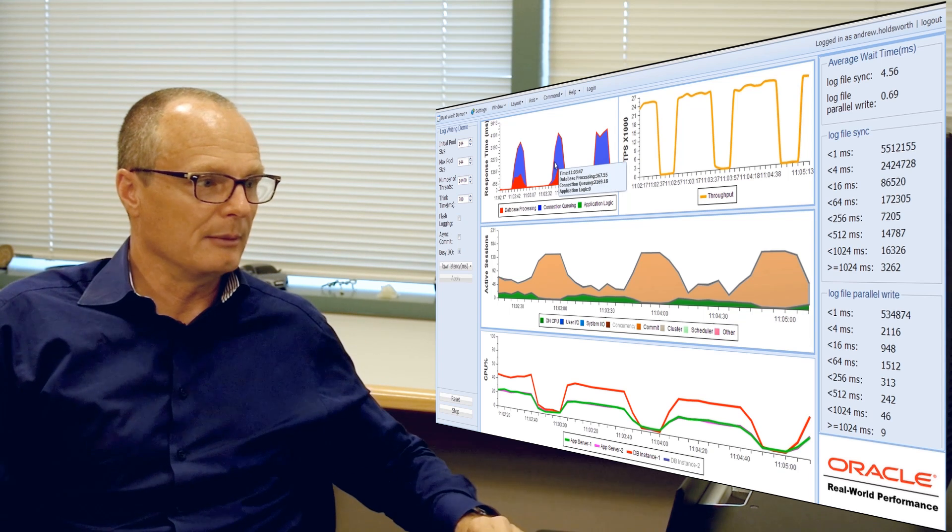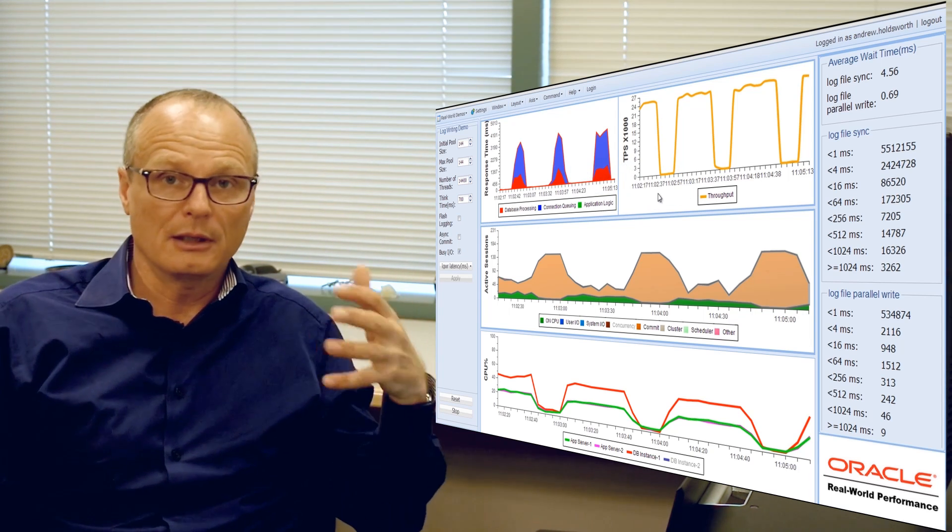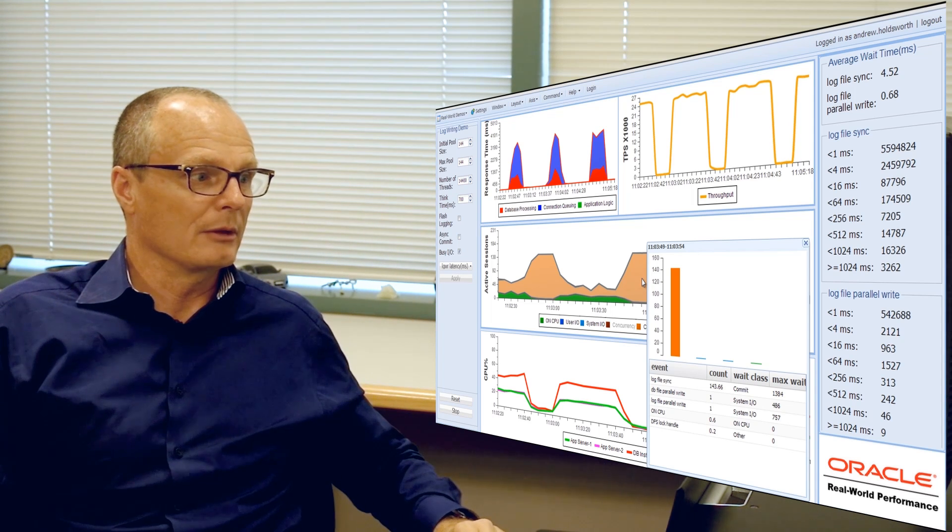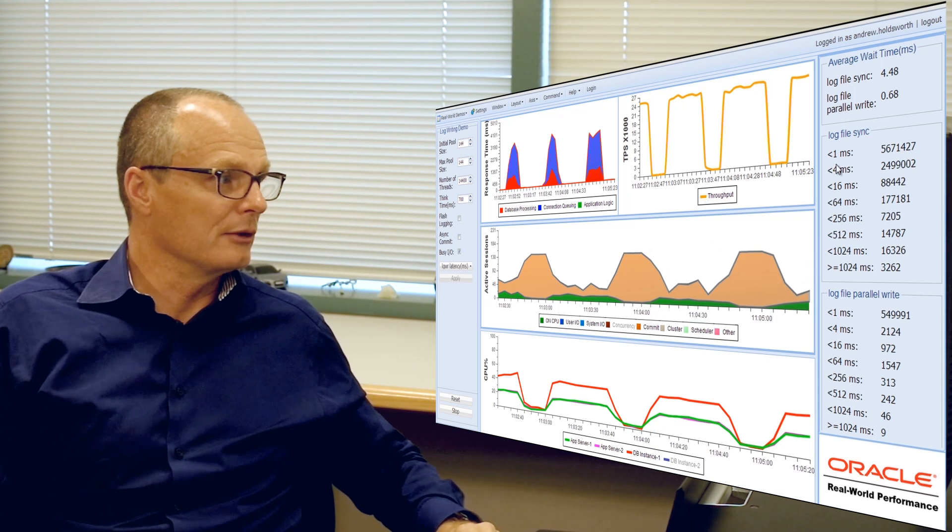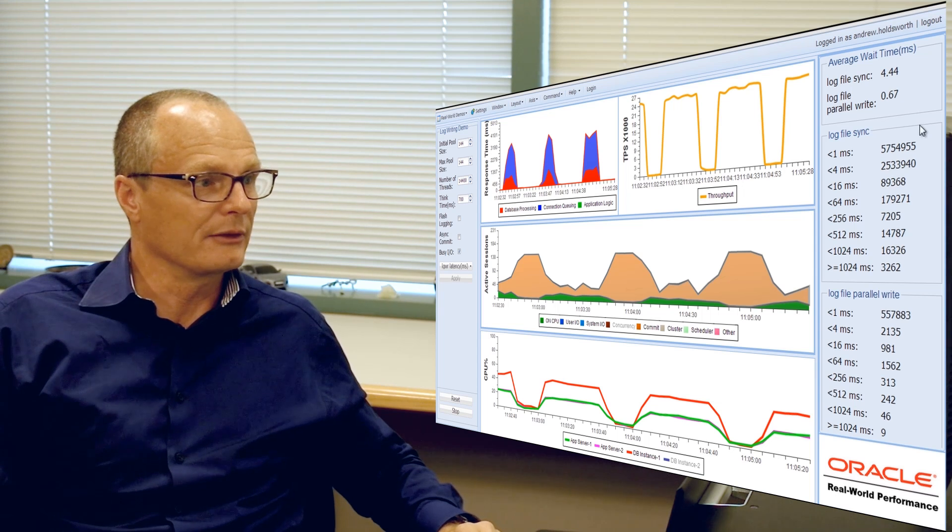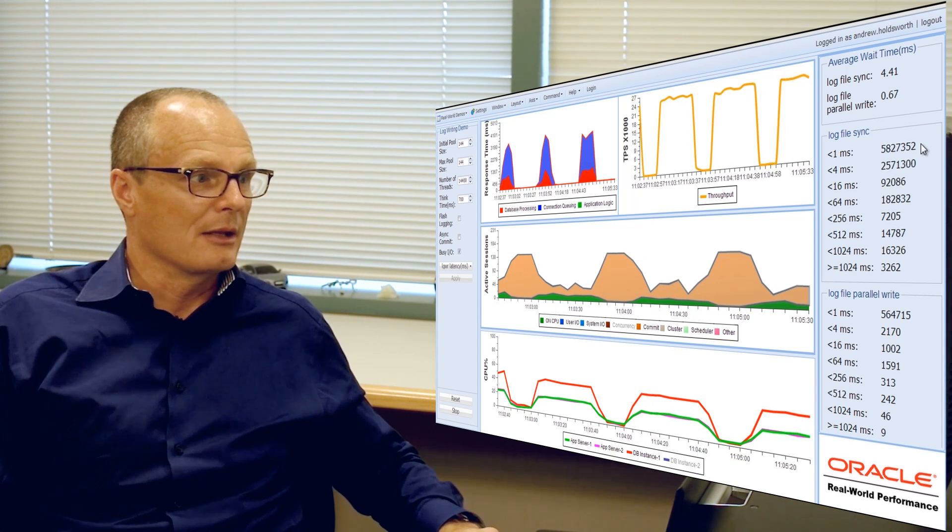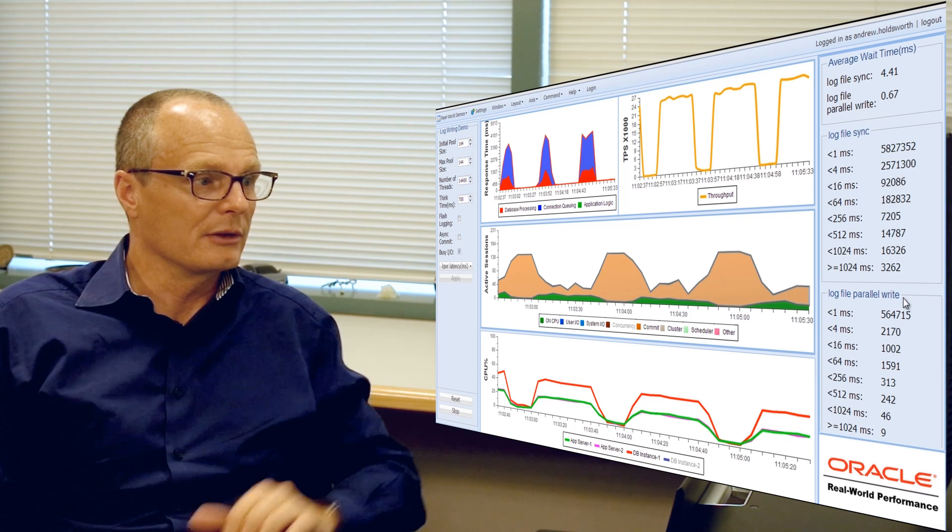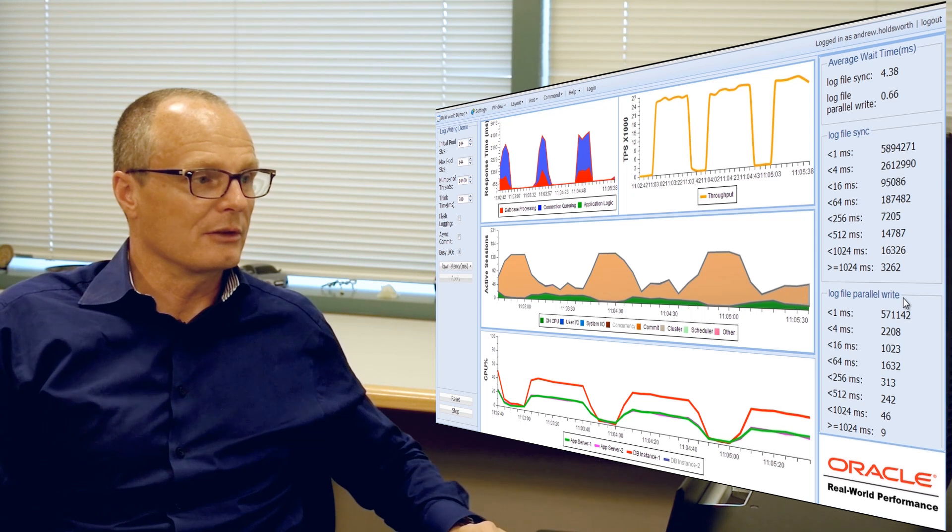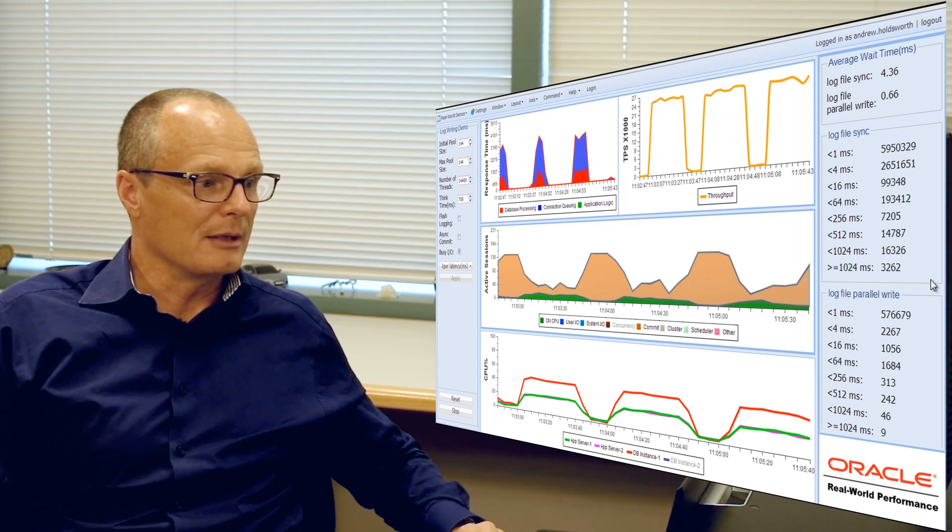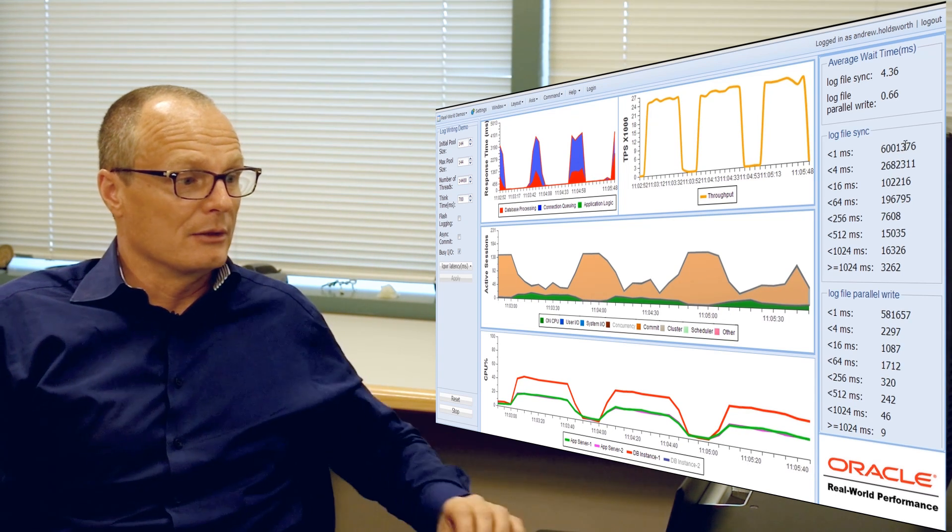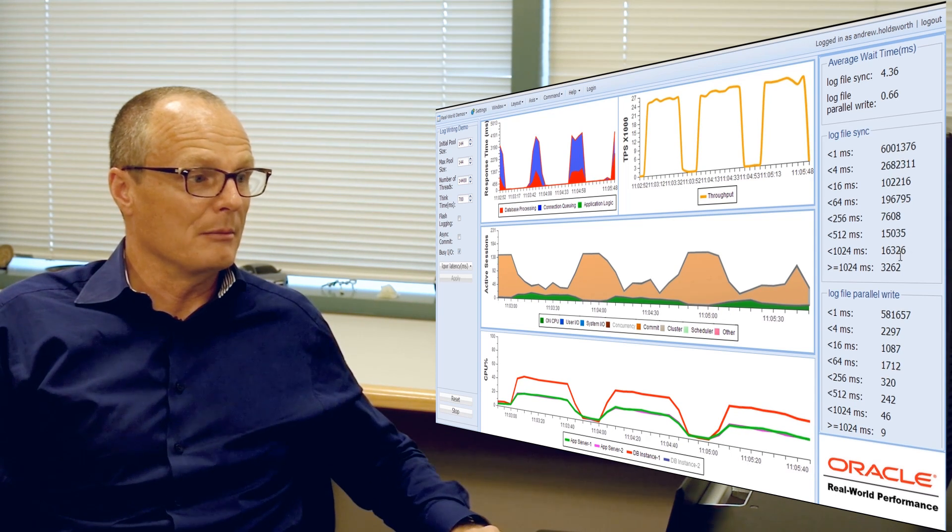Here you can see we have approximately 96 or 100 connections, just over 100 connections to the database, and you can see that the log file sync is approximately 100 times that we have on the log file write. Sometimes as we get into the situation where the log file write becomes more variable, and in fact we've got log writes that are taking more than a second, you can see that this tends to get multiplied through.